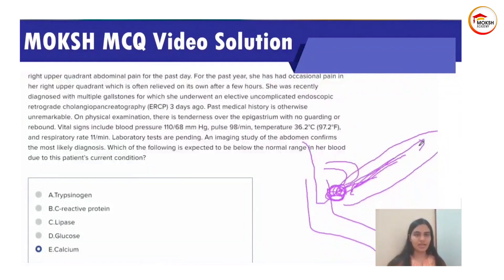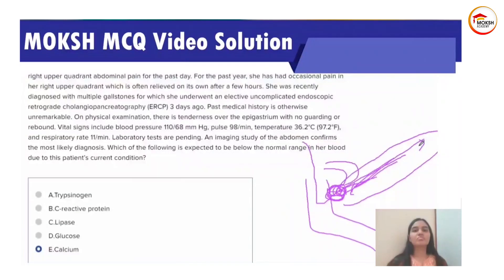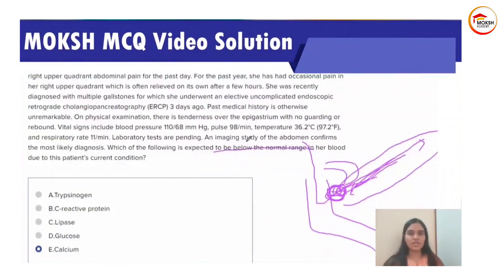Lipase forces the breakdown of lipids into fatty acids, and this now occurs within the pancreas and peripancreatic space. This breakdown of lipids into fatty acids leads to deposition of calcium — calcium combines with the fatty acids and deposits there. The usual entire inflammatory process proceeds from this. Since calcium deposits by combining with fatty acids, the level of calcium decreases in the serum. That is why the correct answer is E) calcium.